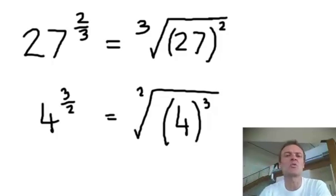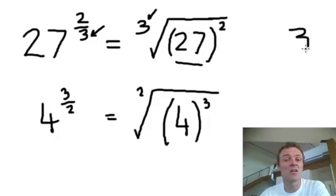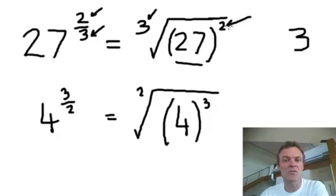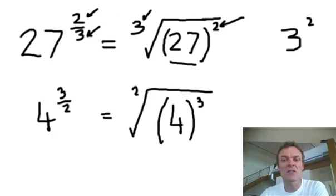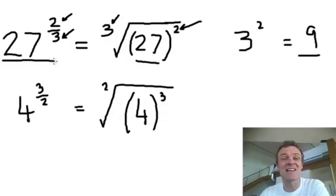How about if we cube root the 27 first? So I'm going to work on this first — cube root a 27. Well, isn't the cube root of 27 equal to 3? The cube root of 27 is 3, because 3 times 3 times 3 is 27. Now I'm going to square it. What's 3 squared? It's 9. So that's what 27 to the power 2 thirds is — it's 9, because I cube rooted it first, then I squared it.